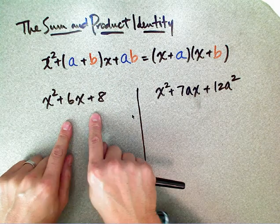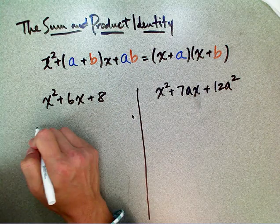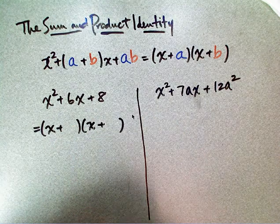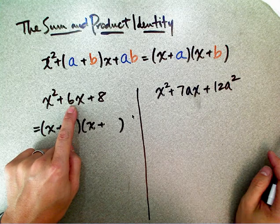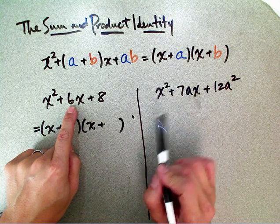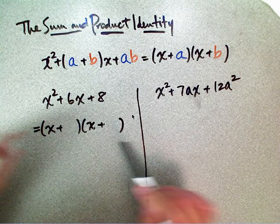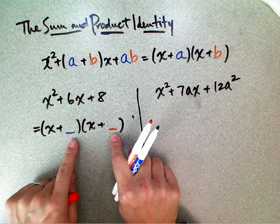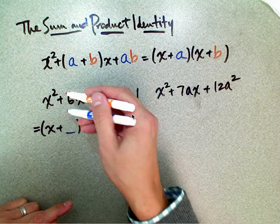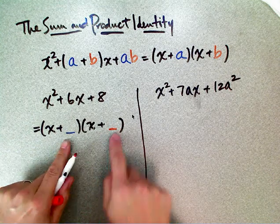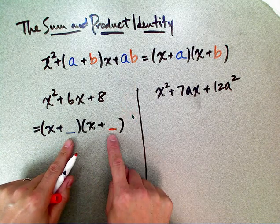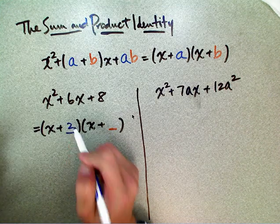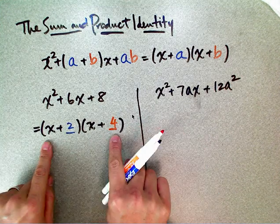Now let's look at this one. We can factor this as x plus some number times x plus another number. The coefficient of x can be found by adding these two numbers — let's call them a and b. If you add them you get that coefficient, and if you multiply them you should get 8. Those two numbers are 2 and 4, and that's how you factor it.